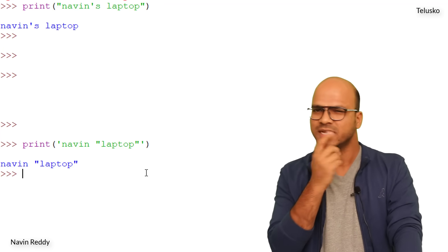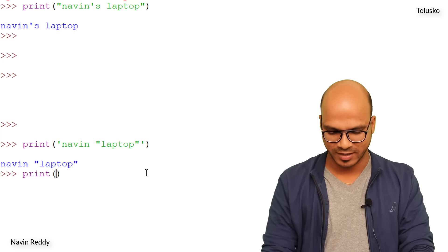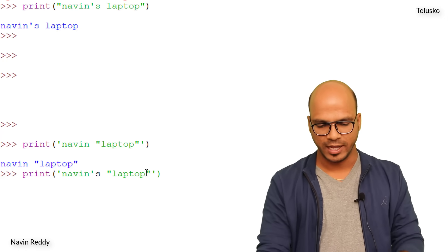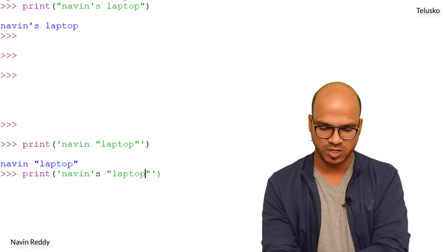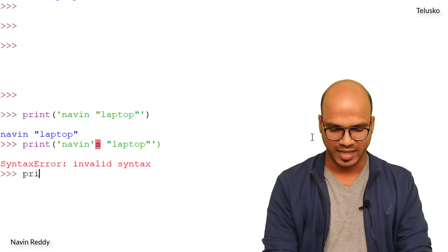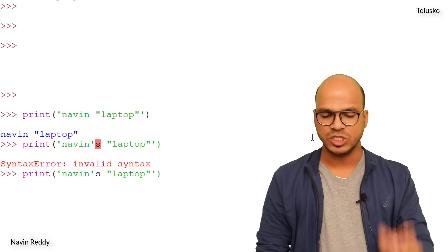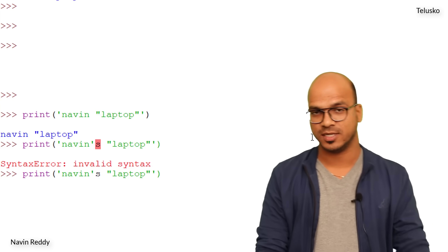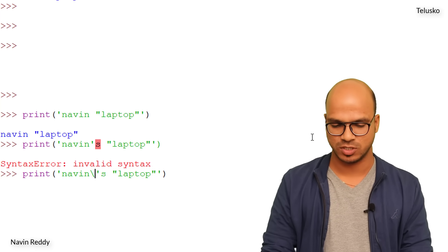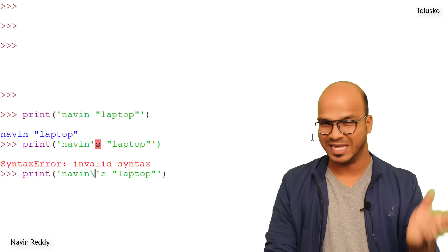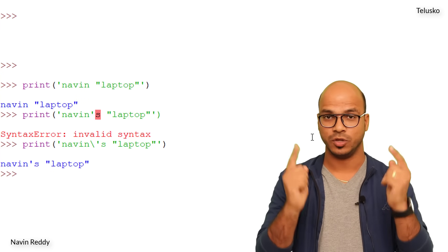If your string contains both single and double quotes, like printing Naveen's "laptop", you'll get an invalid syntax error. The solution is to use a backslash escape character. Place a backslash before the conflicting quote to tell Python to ignore its special meaning. With the backslash, Python treats it as a literal character and the string prints correctly.